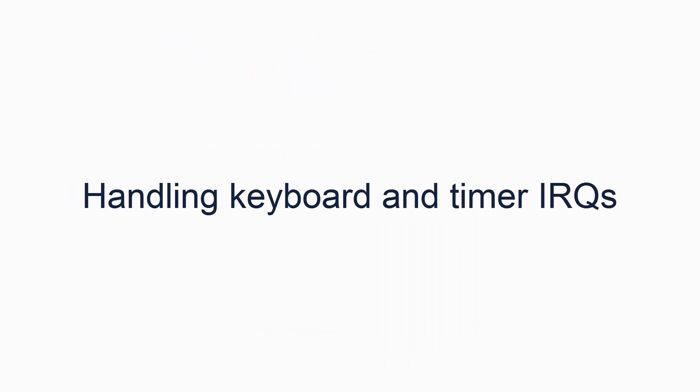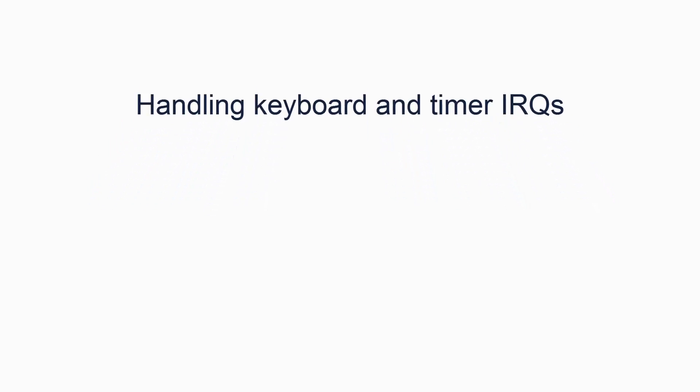Finally, we must look at how to handle these two particular IRQs. For now, we will do our usual thing of just outputting something to the screen when the interrupts occur. However, the timer interrupt is likely to occur very frequently, so we don't want to output a colour every time. Instead, we will just invert the colour of a single character on the screen. Here is the code for the timer and keyboard handlers.